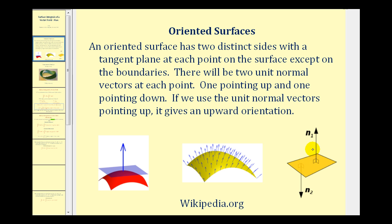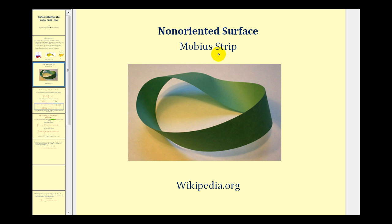If we take a look at this plane here, if we use a unit normal vector n sub two it would give this plane a downward orientation. An example of a non-oriented surface would be the Mobius strip where there's not two sides to the surface.